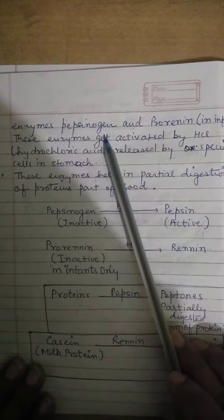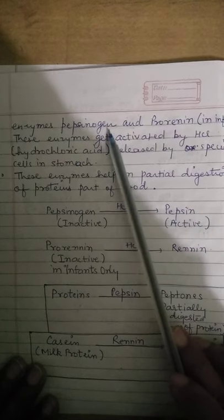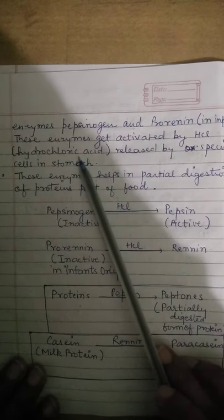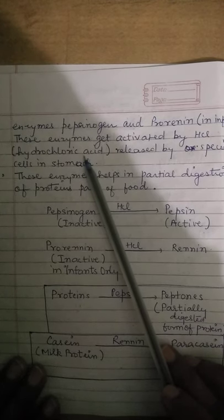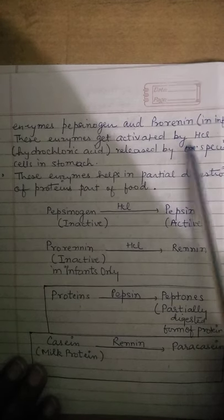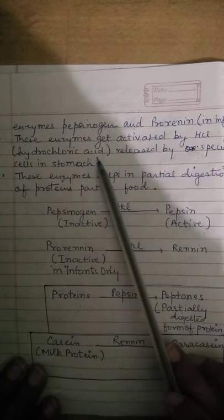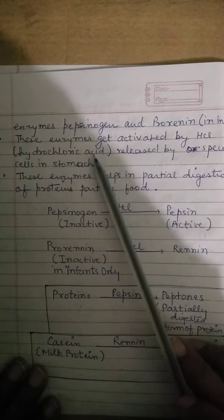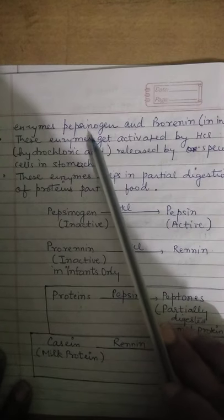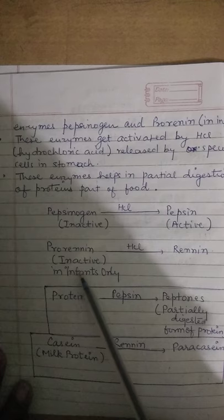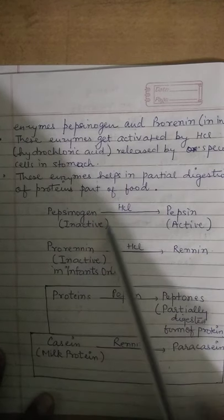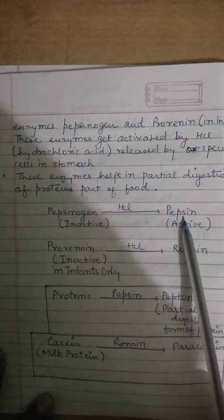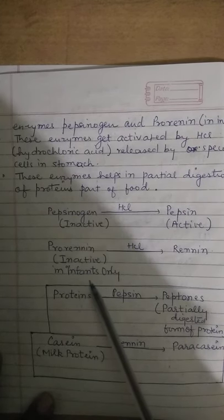In the inner lining of the stomach, gastric juices are released. There are special cells that secrete hydrochloric acid — a mineral acid — in small quantities. Hydrochloric acid plays a very important role because pepsinogen and pro-renin are the inactive forms of pepsin and renin respectively, and HCl activates them.